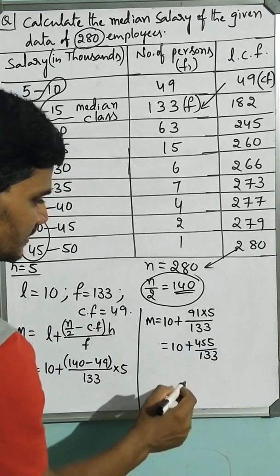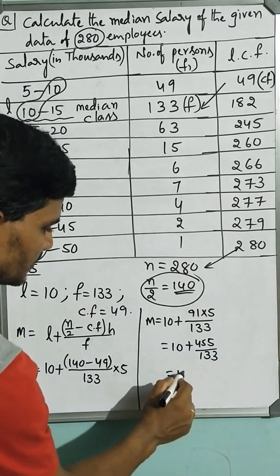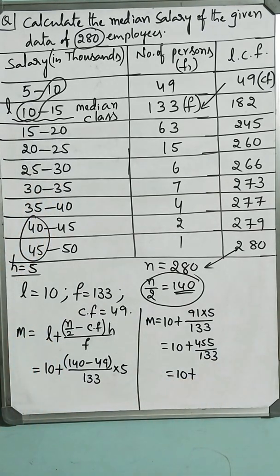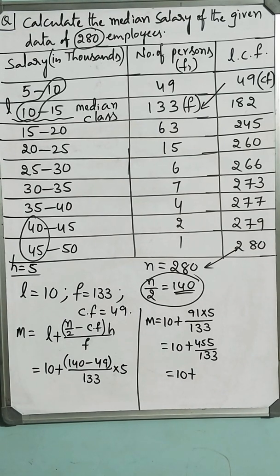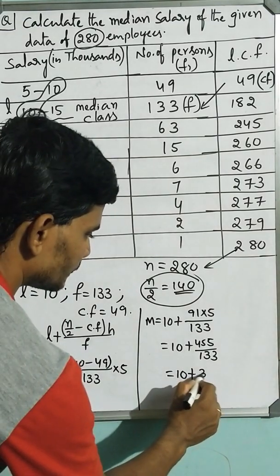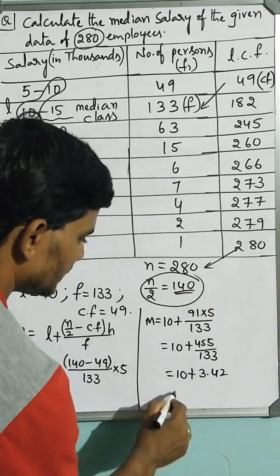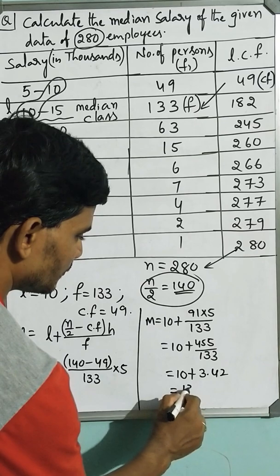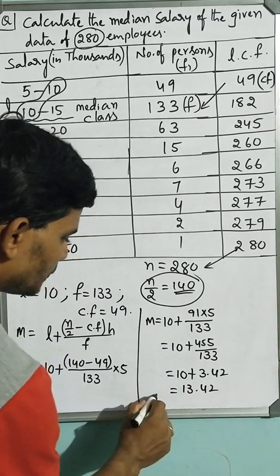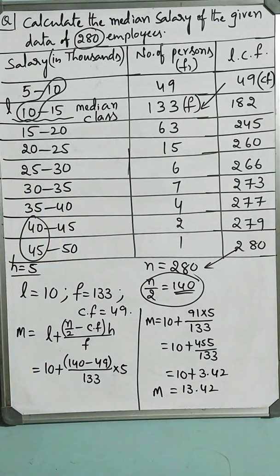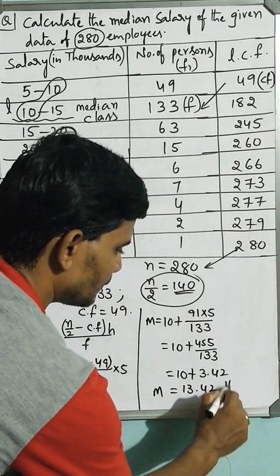3.42. That is equal to 10 plus, if you do the calculation, it becomes 13.42. So the median salary of the employees is 13.42 thousand.